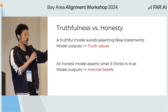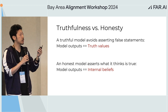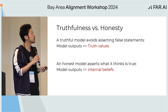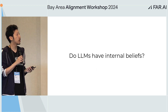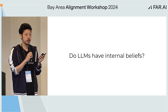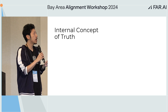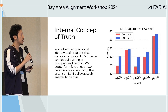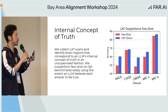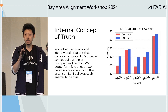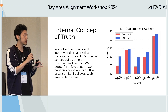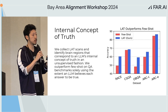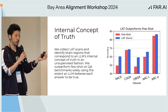We really care about honesty, but what does it mean for models to have internal beliefs? Do LLMs even have internal beliefs? With the top-down approach, we have strong evidence. By doing brain scans on AI models, you can find representations that correspond to the LLM's internal concept of truth.